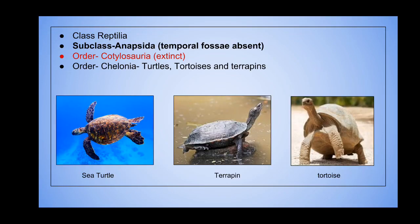In Class Reptilia, subclass Anapsida has no temporal fossae and two orders: the extinct Order Captorhinosauria and Order Chelonia, which includes turtles, tortoises, and terrapins. You can see pictures of the sea turtle, with limbs modified into paddles for swimming, as they are mostly aquatic and come on land only for laying eggs. This group is called sea turtles.